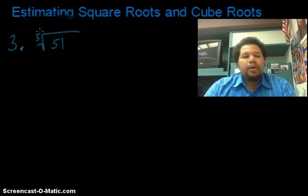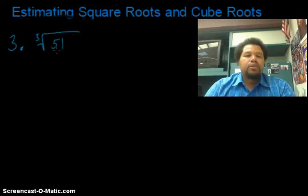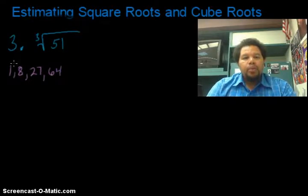Okay, in this example, we are finding the cube root this time, not the square root, but the cube root of 51. So again, I have to start thinking of the perfect cubes. And I come up with 1, 8, 27, 64.